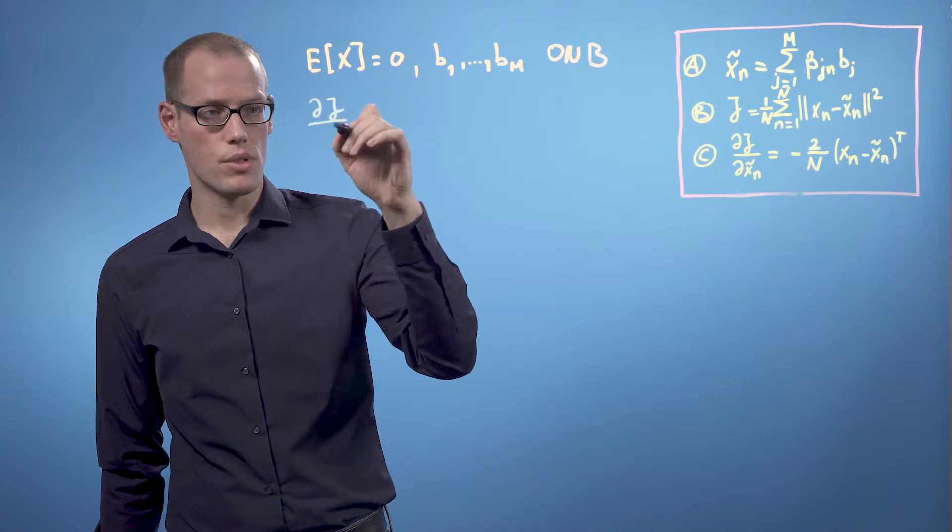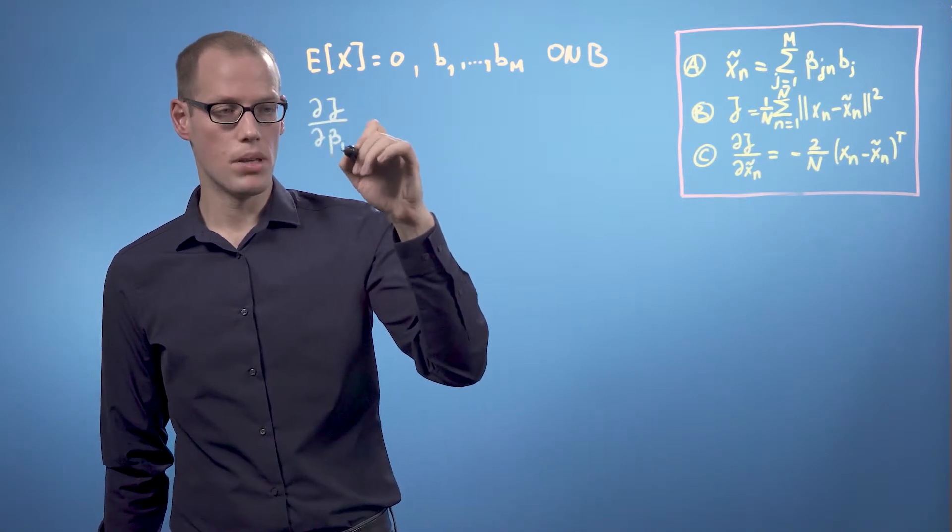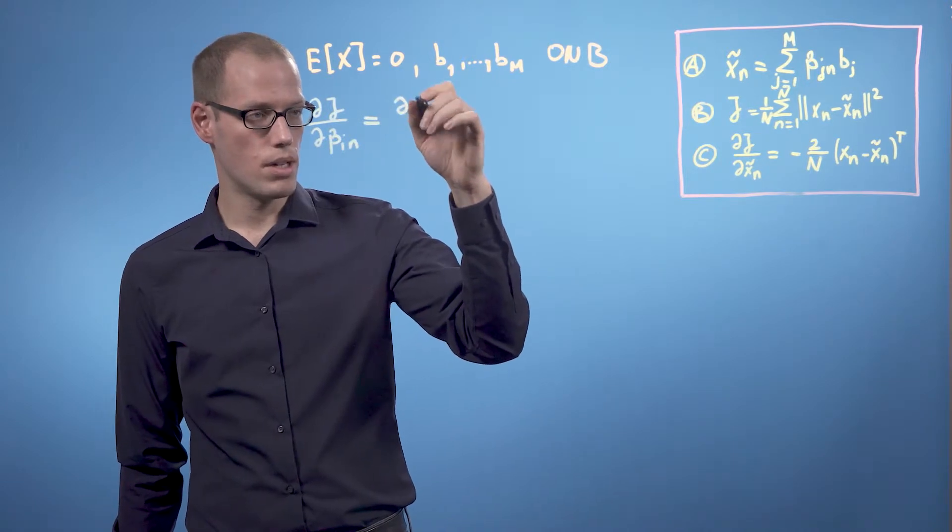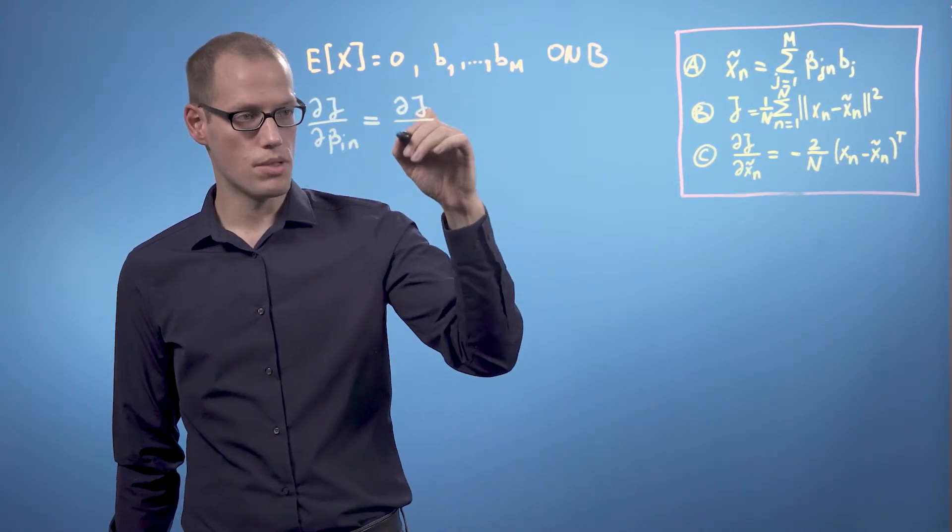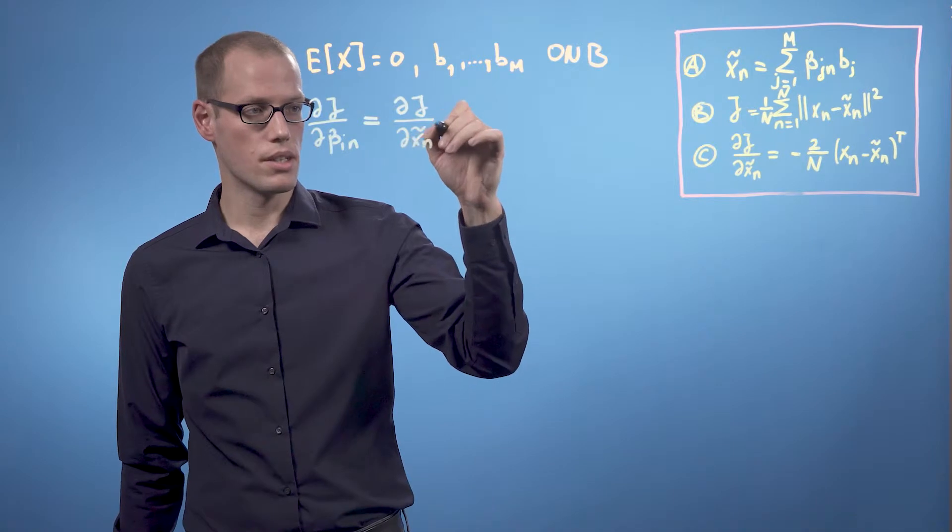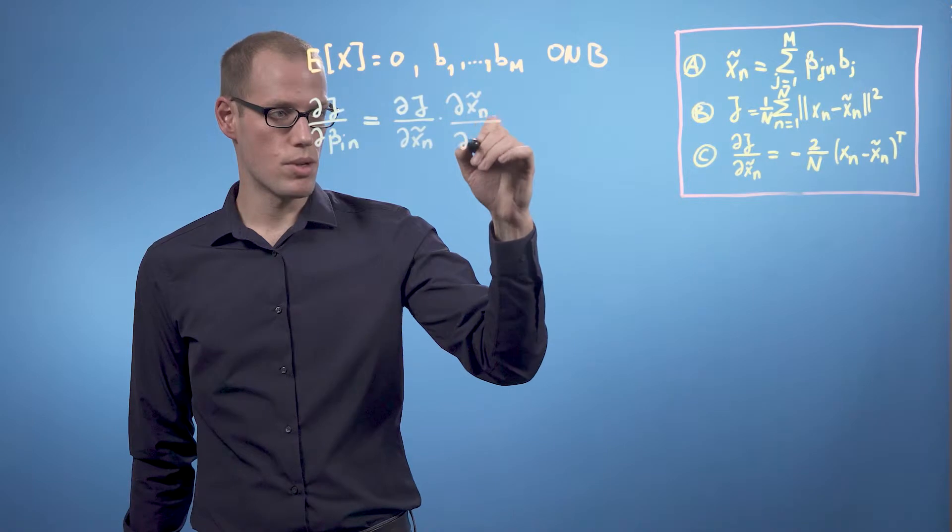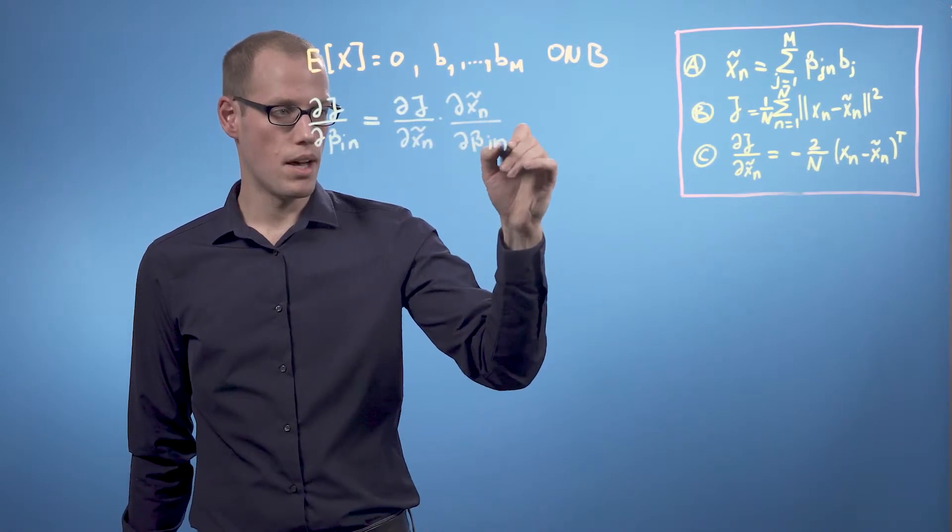So dj with respect to dbin is the derivative of j with respect to xn tilde times the derivative of xn tilde with respect to beta in.